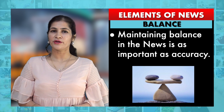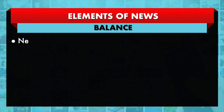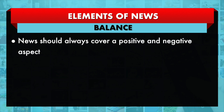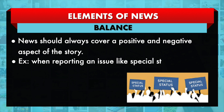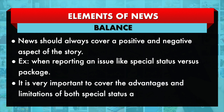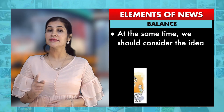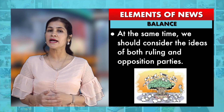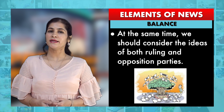The second element is balance. Maintaining balance in news is as important as accuracy. News should always cover both positive and negative aspects of the story. For example, when reporting an issue like special status versus package, it is very important to cover the advantages and limitations of both. At the same time, we should consider the ideas of both ruling and opposition parties.